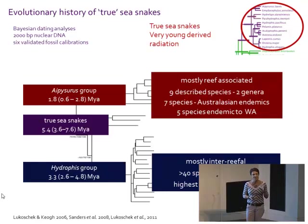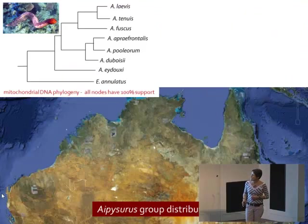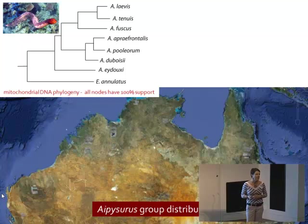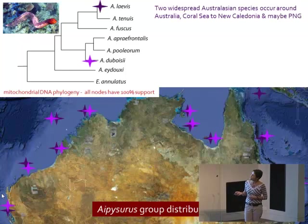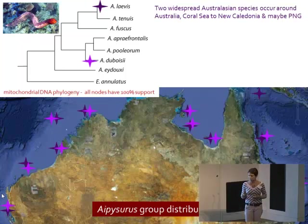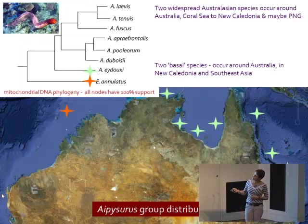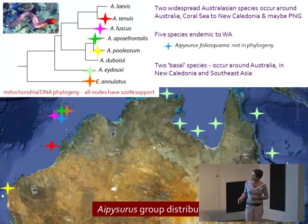There's only two genera, nine species, and all of them occur in Australia, and a lot of them are endemic to Australia. Focusing on this group, this mitochondrial phylogeny describes the relationships among species and all the branches have really strong support. There are two really widespread species that occur all around Australia, also in New Caledonia, and possibly also in New Guinea. There are two basal species that also occur around Australia and in Southeast Asia. And then there are five species endemic to Australia — and they're endemic to West Australia.